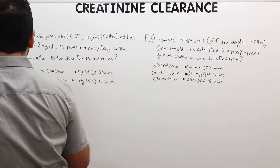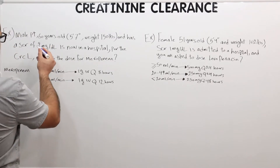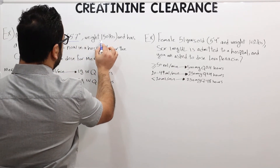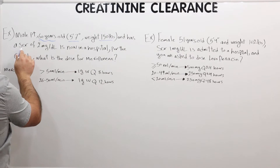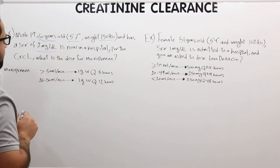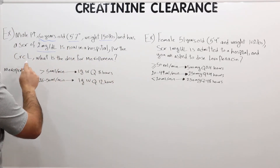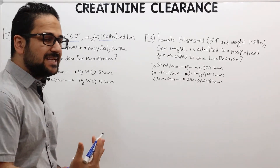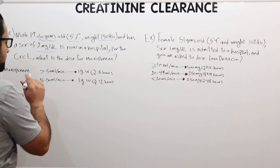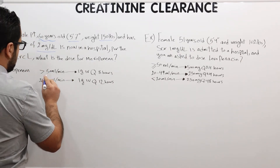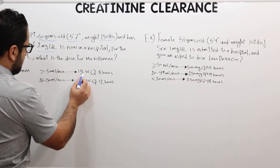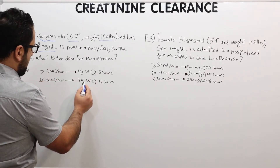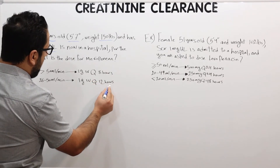Example number one: a male patient who is 60 years old, five feet and seven inches, weight 150 pounds, and a serum creatinine of 2 milligrams per deciliter, is in the hospital. Per the creatinine clearance, what is the dose for meropenem? If creatinine clearance is above 50, the dose is 1g IV Q8H. If it's between 26 to 50, the dosing interval changes to Q12H.